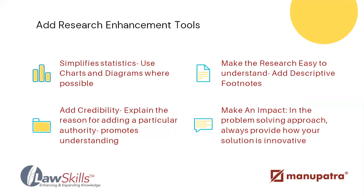Next, use enhancement tools — add statistics where possible, and use charts and diagrams. If you're writing about an act and want to illustrate its legislative history, always use a flowchart. To make research easy to understand, add descriptive footnotes wherever possible — not just when citing an authority, but also when you want to explain a particular term or line rather than making it part of the main paper. To add credibility, if you're citing a particular authority, use multiple authorities on the same point together.